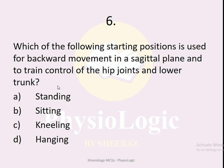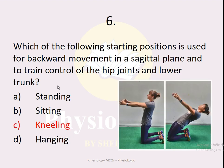MCQ number six: which of the following starting positions is used for backward movement in a sagittal plane and to train control of hip joints and lower trunk — standing, sitting, kneeling, or hanging? The correct option is kneeling. Kneeling is the position used for backward movement in a sagittal plane and to train control of hip joints and lower trunk muscles.